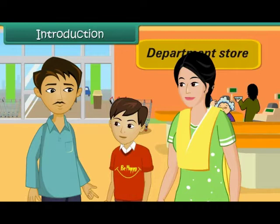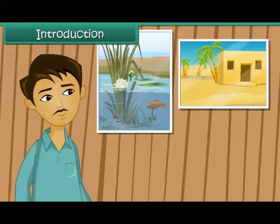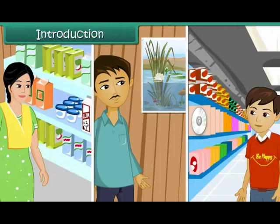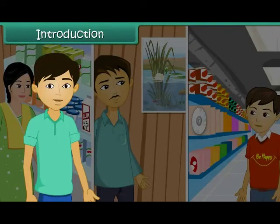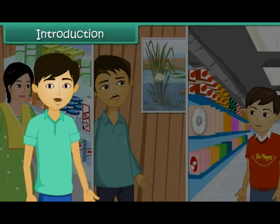Introduction: You are in a department store with your parents. Your mother wants to pick up groceries, your father wants to look at some paintings, and you want some music DVDs for yourself. The three of you head in three different directions because all the objects in the store are categorized into different sections according to their types. Such organization is convenient and leads to better management.